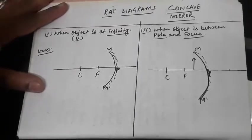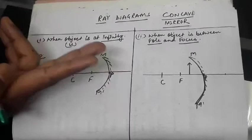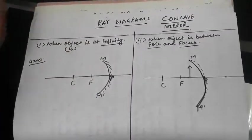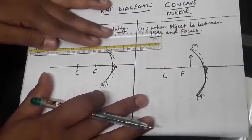So at least out of four rules, at least we have to use two rules. We have to take two rays at least to draw a ray diagram, at least two rays to form an image.